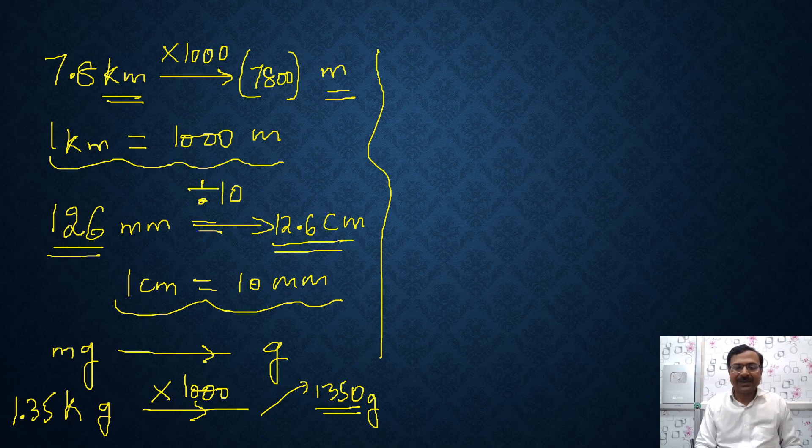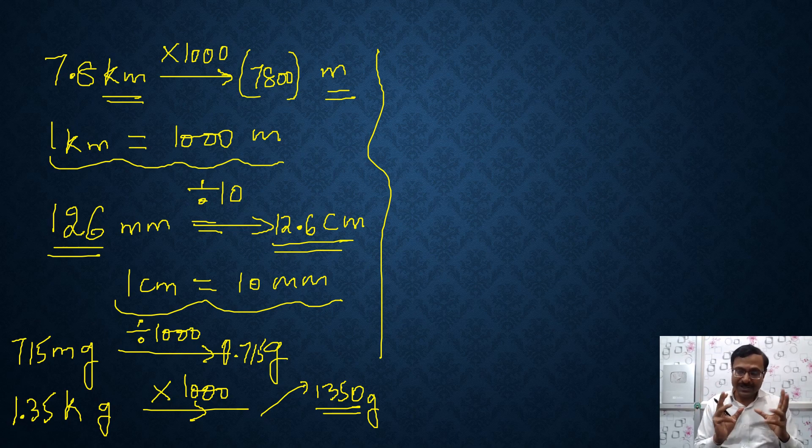Likewise, if you want to convert milligram into grams. Like suppose you have 715 milligrams. So you have to divide that by 1000 and get your answer. 1 gram has 1000 milligrams. So 0.715 grams. That is application of the concept which I told you.